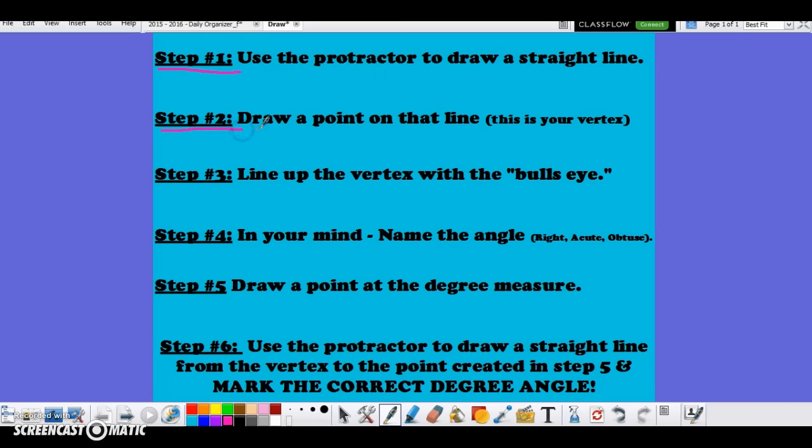Step 2 is drawing a point on that line. This is eventually going to become your vertex and I suggest that you draw this line somewhere close to the middle of your line segment that you drew in step 1. Step 3 is lining up the vertex, that point that you just drew, with the bullseye of the protractor. We recently talked about the bullseye, that's that little circle that is typically where that upside down uppercase T meets in the protractor.